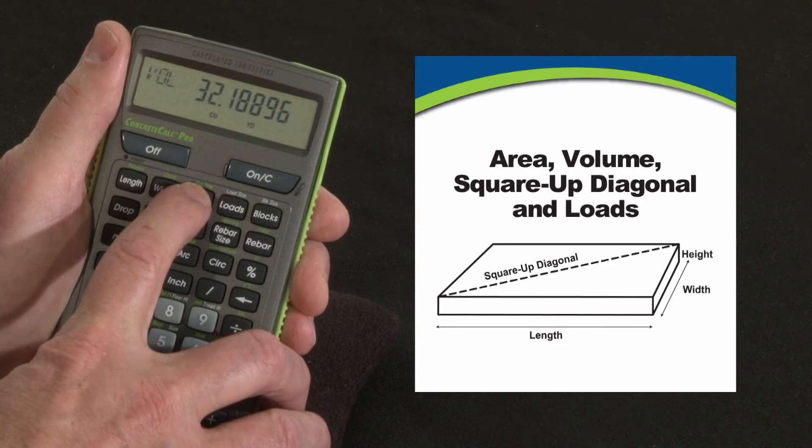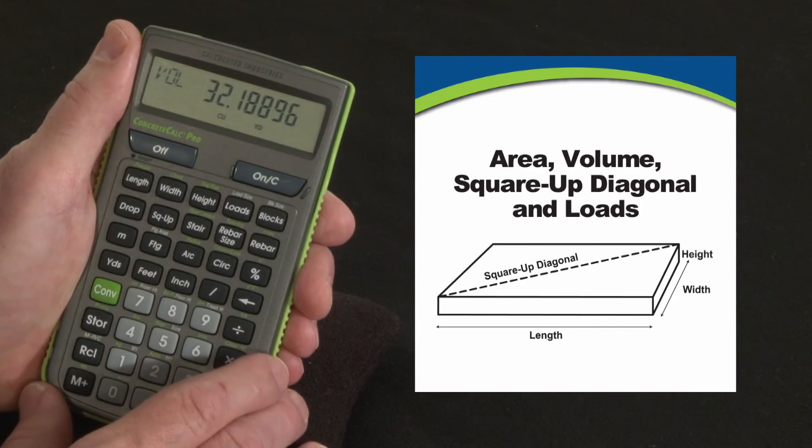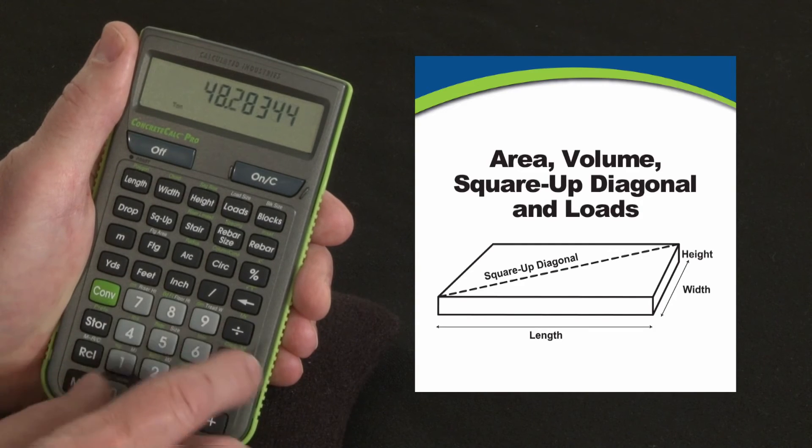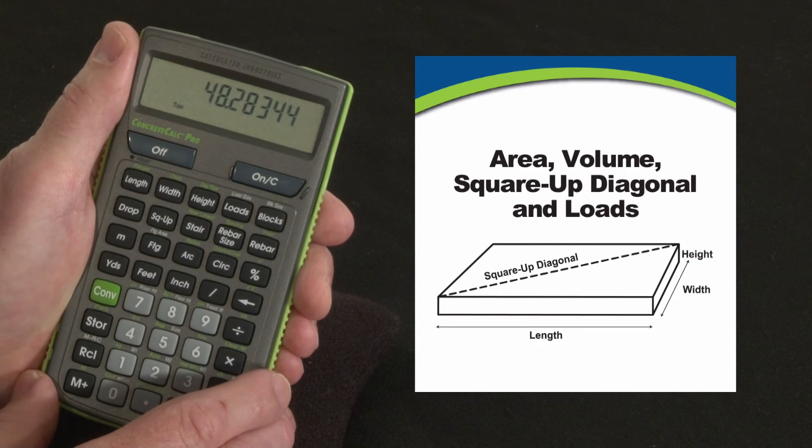Another thing you can do with this volume number, once you've got it, this 32 cubic yards, is figure out the weight in anticipation of what kind of loads you're going to have. You can just hit convert to tons, and that's going to be 48.28 tons.